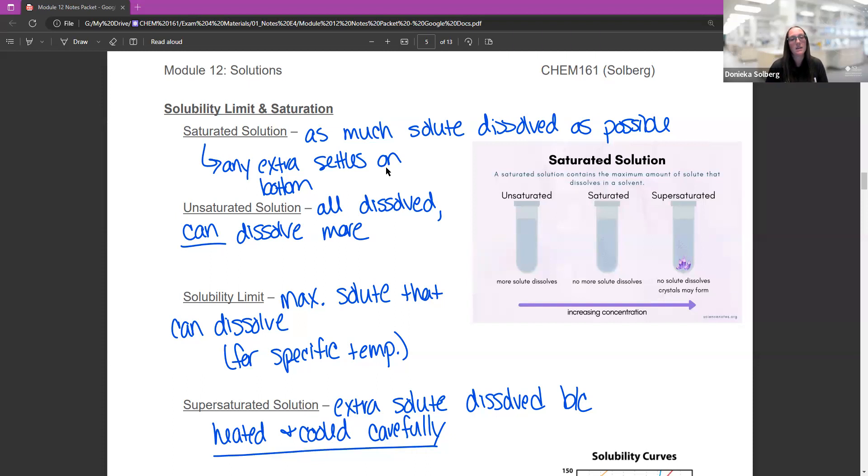An unsaturated solution means everything is soluble, but you could actually dissolve more. If you had coffee and added sugar to it and it dissolved, that means it's an unsaturated solution. The solubility limit is the max solute that can be dissolved. All substances have their own solubility limit - the specific amount that can dissolve at a given temperature.